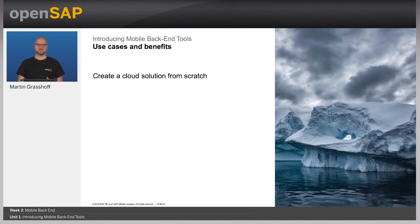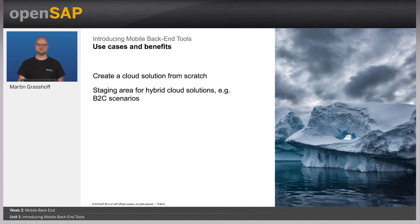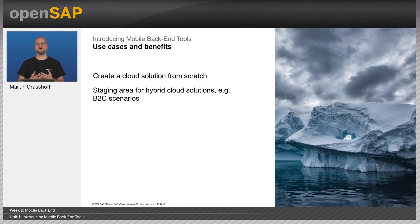The mobile backend tools are really a great tool to build your backend if you are starting your mobile solution from scratch, meaning you don't have any backend yet. So this is the very first use case you would use that toolset for. But there are other use cases — for instance, you can use it as a staging area where you copy data from your business systems into the backend system onto the cloud platform and serve it from there, so that the end user will not directly tap into the backend system. This will offload your backend system and the traffic will not go directly to it. This is often used in B2C scenarios.